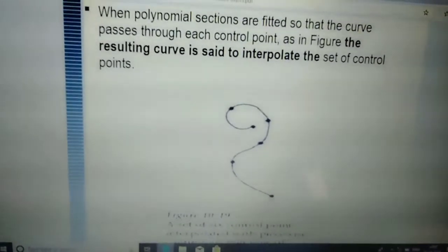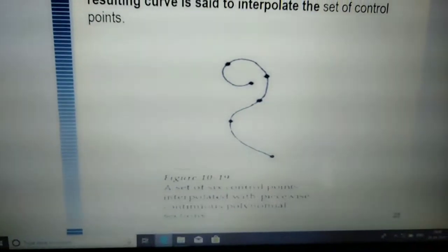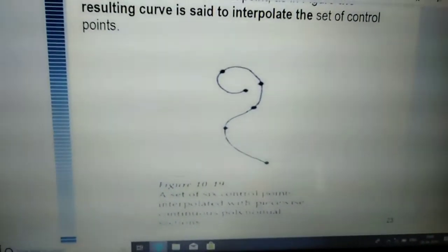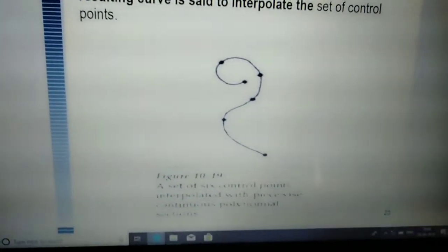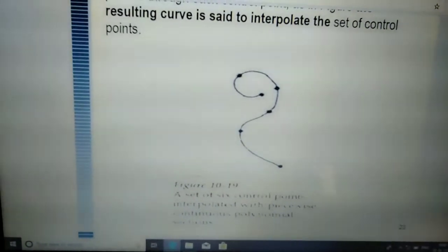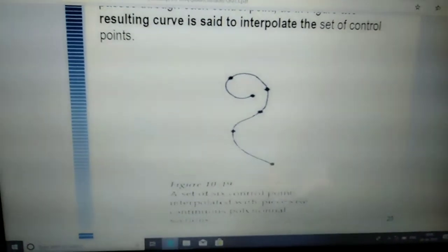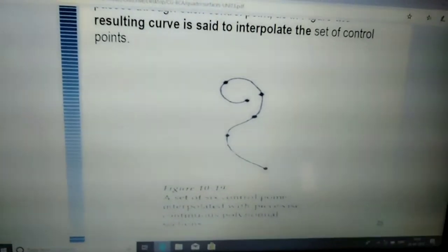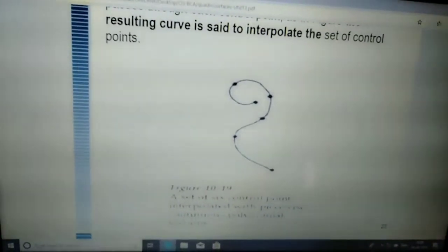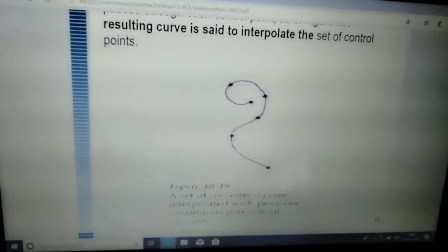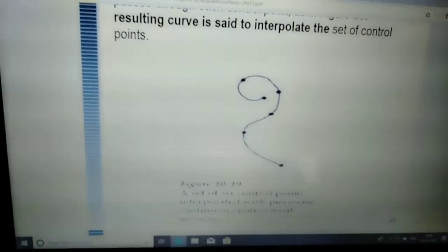This is a flexible strip, as the definition of spline stated. In interpolation spline, these dots are on the line, so the control points are on the line. This is an interpolation spline.